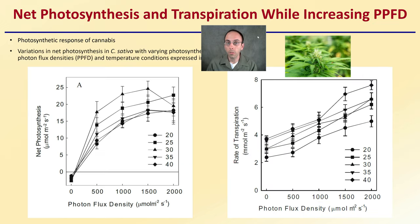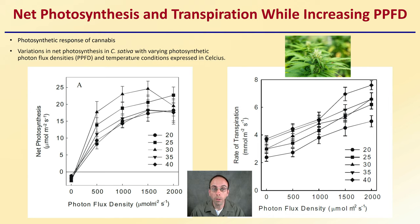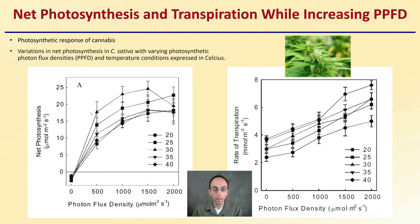Now we're looking at net photosynthesis and transpiration while increasing the light intensity measured in PPFD. Photosynthetic responsive cannabis — variations in net photosynthesis for Cannabis sativa with varying photosynthetic photon flux densities, in temperature conditions expressed in Celsius. We have photon flux density on the x-axis and net photosynthesis on the y-axis, and we can see there is an increase and then a leveling off with regards to net photosynthesis.